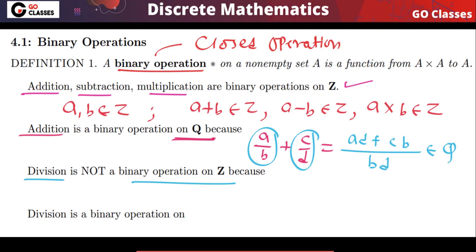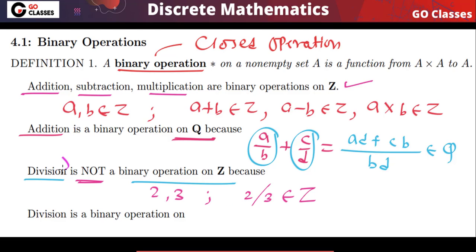Division is not a binary operation on the set of integers because if you take elements like 2 and 3, then 2 divided by 3 does not belong to the integers. So division is not closed on integers, and therefore not a binary operation on integers. Binary operation is basically closed operation — it takes two elements of set A and gives another element of set A.